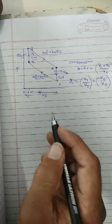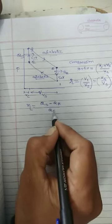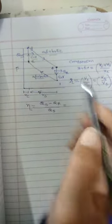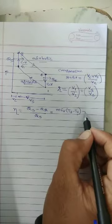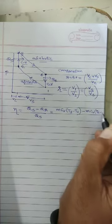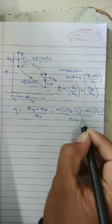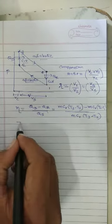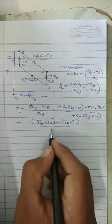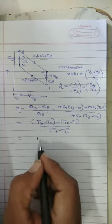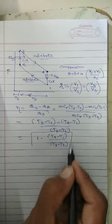Now we would like to prove the equation of efficiency. Efficiency is heat supplied minus heat rejected divided by heat supplied. Heat supplied is M·Cv·(T3 − T2), and heat rejected is M·Cv·(T4 − T1). M and Cv cancel out, giving us the efficiency in temperature form: 1 minus (T4 − T1) divided by (T3 − T2).